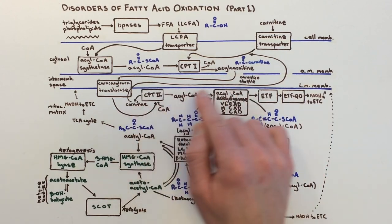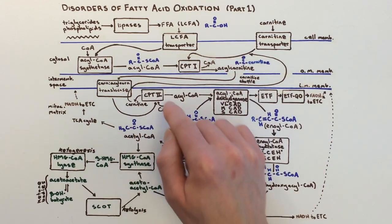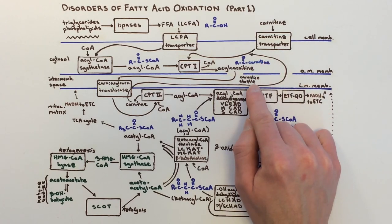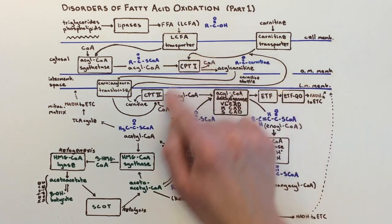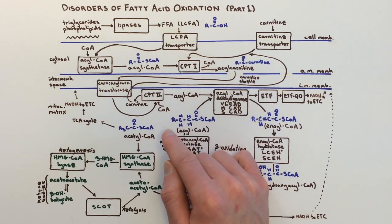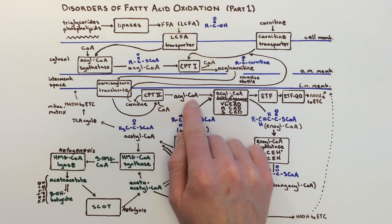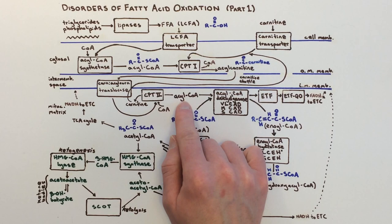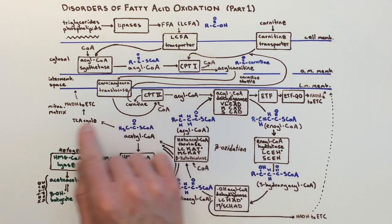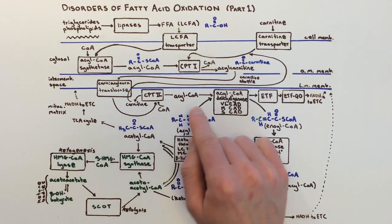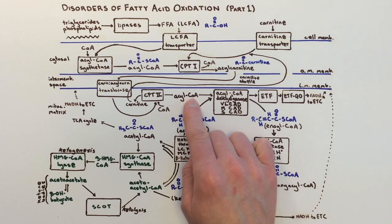Because carnitine is really just serving the purpose of bringing the acyl groups in, and then it itself is going back out, we call this the carnitine shuttle, and as you might have guessed, there can be disorders of this part of the pathway as well. So acyl-CoA, that's what we're left with after CPT2, here inside the mitochondrial matrix. And this is where the pathway really gets to the heart of what beta-oxidation is, this is where it starts, and also really, I think, is a fun pathway in that it just makes sense once you get it.